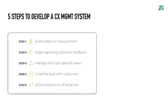To wrap up, we've talked about five steps to developing and delivering a CX management system: first, build a plan for measurement; second, begin capturing customer feedback; third, manage with role-specific views; fourth, close the loop with customers; and finally, begin utilizing analytics to drive action. I focused primarily on the stages for rolling out this program because most important is having a clear plan and being deliberate in how you roll out your program, recognizing that as you begin capturing feedback things will change and your program will evolve. But if you have a structure and a plan in place, you have a strong foundation upon which to pivot, innovate, and capture alignment and support from across the business early in the process.